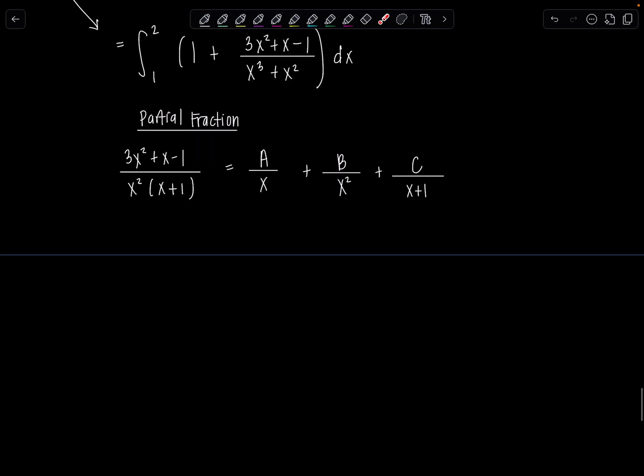I also have a surprise surprise video on partial fractions if you need a refresher. So now our job is to solve for the constants A, B, and C. Let me multiply through by x squared times x plus 1, so we get rid of all the denominators. So on the left-hand side, we'll have 3x squared plus x minus 1 equals, now one of the x's is going to cancel here, so I just have A times x times x plus 1, plus, next is B times x plus 1, plus Cx squared.